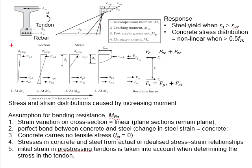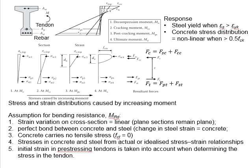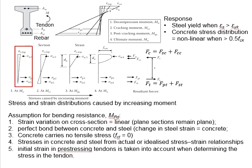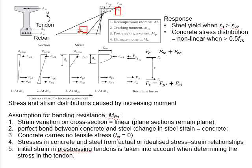At the decompression moment, the entire section is undergoing compression. There is no tensile strain and there is a small degree of compressive strain. As the development of stress is proportional to the development of strain, this gives the stress profile at this stage. The stress in the reinforcement bar and the tendon can be calculated based on the strain developed within them.